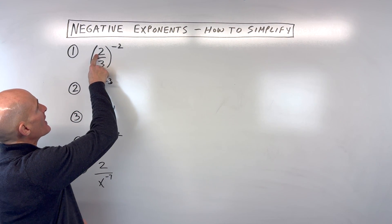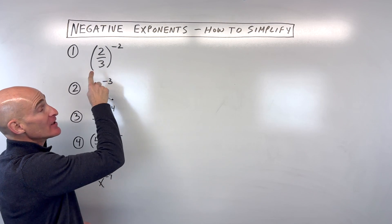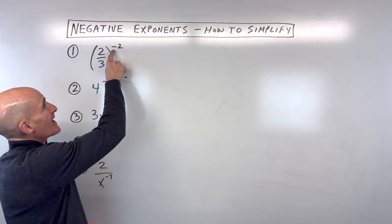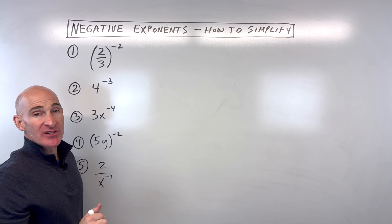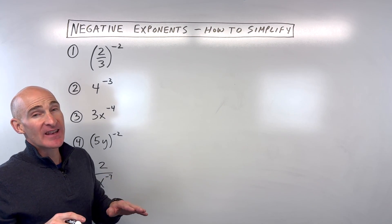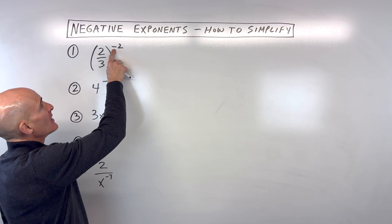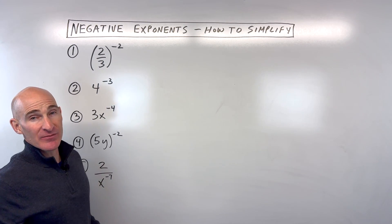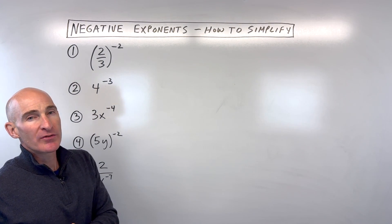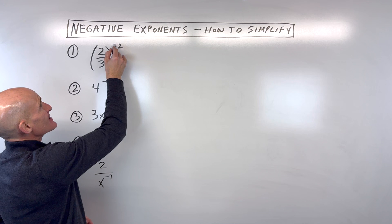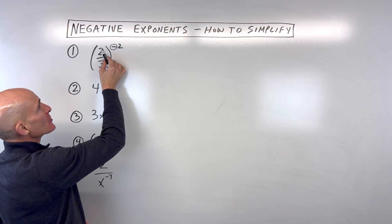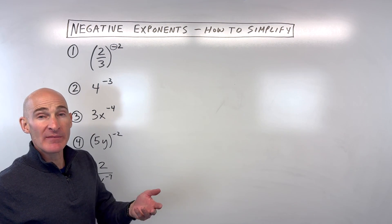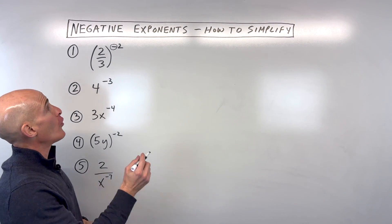Our first example, we've got two-thirds to the negative two power. Sometimes when people see this negative, they think that means the number is negative. Well, that's not true if it's an exponent. They also sometimes look at this as a minus sign of some sort. But what you want to think of when you have a negative exponent is that this negative is actually telling you to take the reciprocal of the base. What do we mean by the reciprocal? It means that we flip it over.